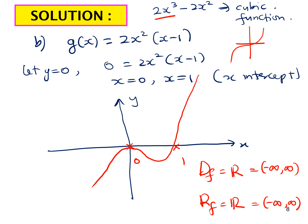If you're unsure how to sketch, substitute test values. For x = 2: the factor 2x² is positive and (2-1) is positive, so y is positive. For x = 0.5 (between 0 and 1): 2(0.5)² is positive but (0.5-1) is negative, so y is negative. For x = -1: 2(-1)² is positive but (-1-1) is negative, so y is negative.